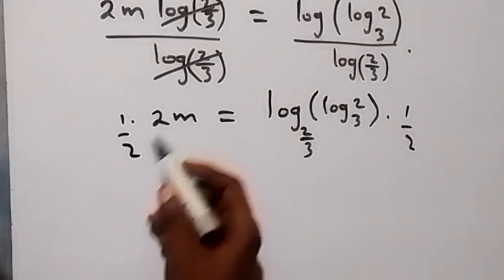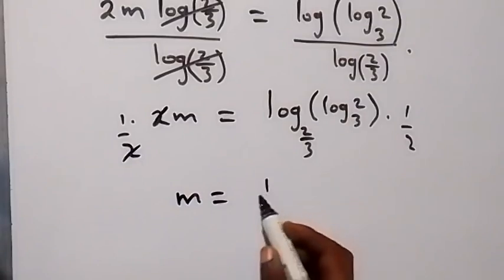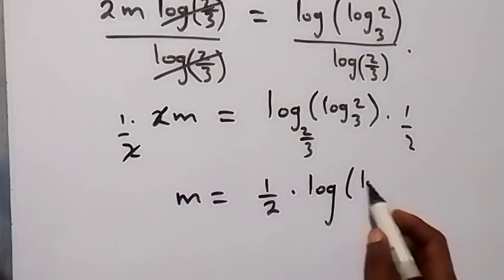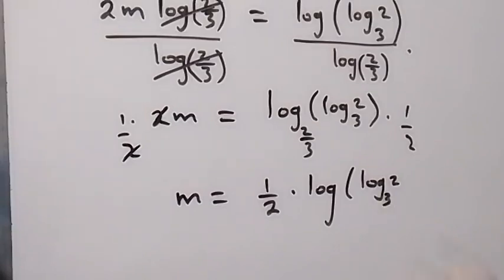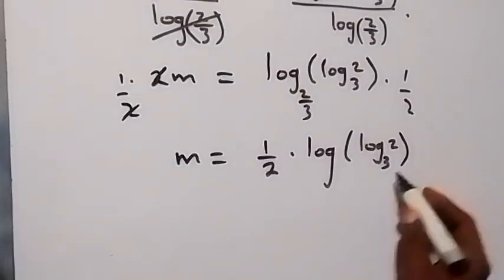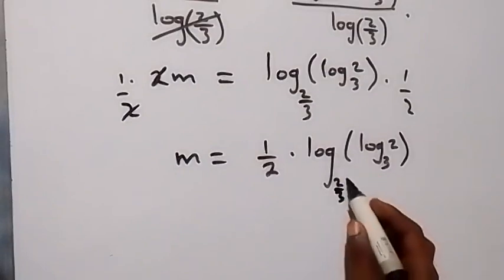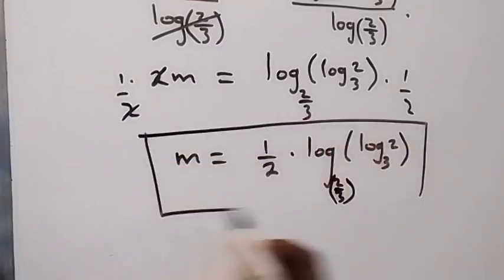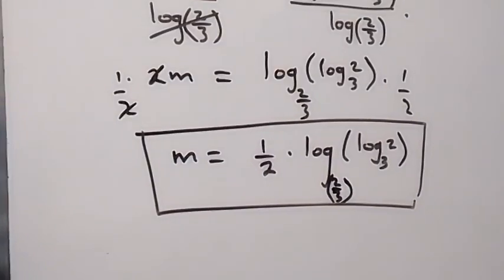The 2 here cancels out and we have m equals one half times log of log 2 to base 3, over log 2 over 3. Here we have the value of m in this given problem, and that's the end of this particular problem. Thank you for watching.